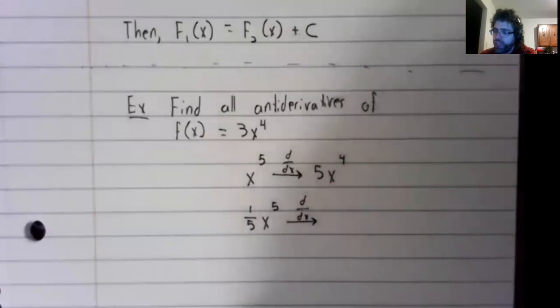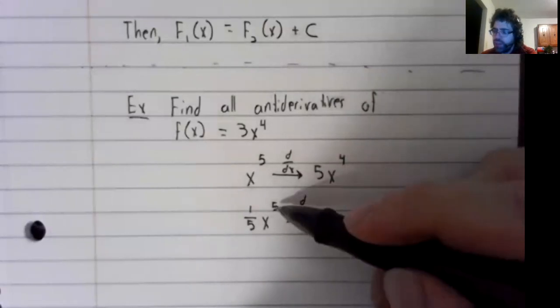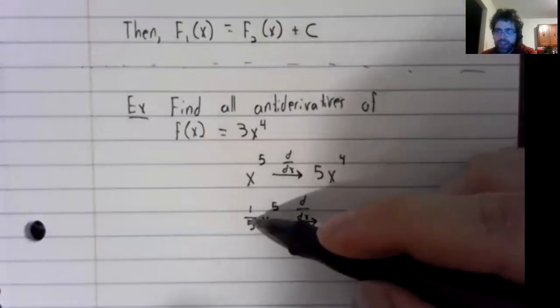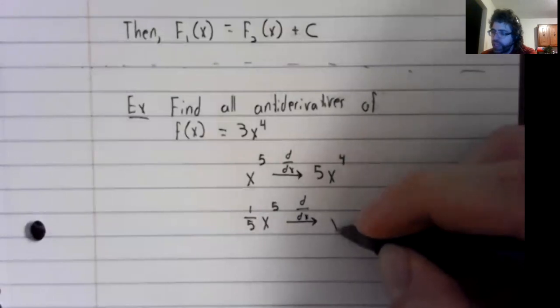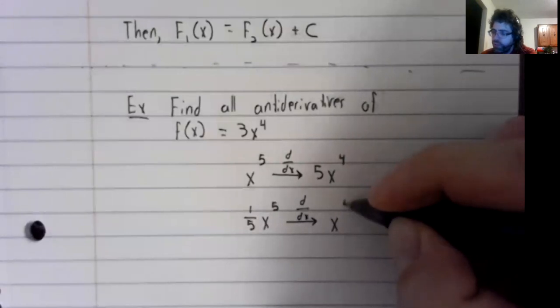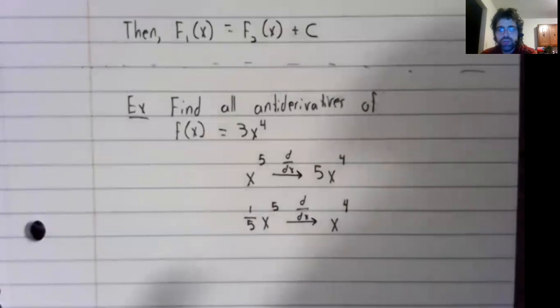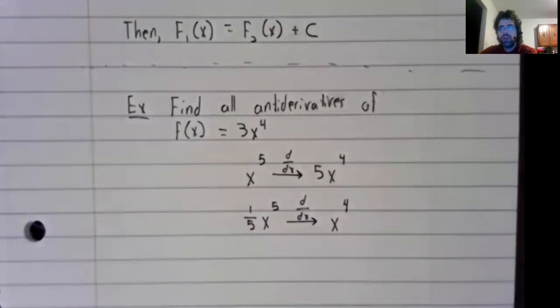Then, when you take the derivative, this 5 and this 1 fifth cancel, and you get x to the fourth.